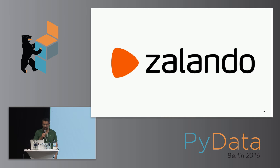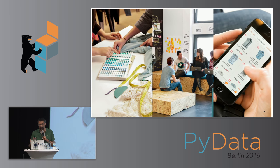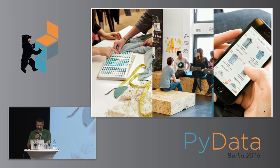My name is Kashif and I work in the sales forecasting team at Zalando. For those who don't know Zalando, it's one of the leading European fashion platforms with a yearly revenue of 3 billion euros and around 18 million active customers. At Zalando Tech in Berlin, we have about 1,500 developers and scientists, and Zalando is hiring developers and data scientists.